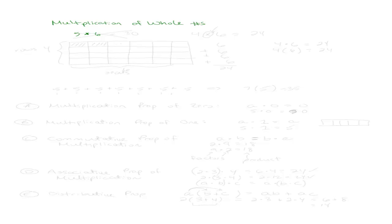Everyone knows the multiplication tables, and if you don't, you should really go ahead and learn them right now. Everyone knows that 5 times 6 is 30. But why is 5 times 6, 30? Well, one of the ways to explain it is that multiplication relates to addition.